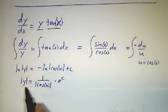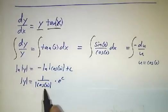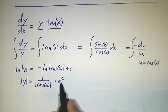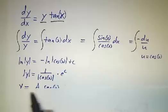So exponentiate both sides. We get the absolute value of y is 1 over the cosine of x times a constant. In other words, y is a constant times the secant of x.